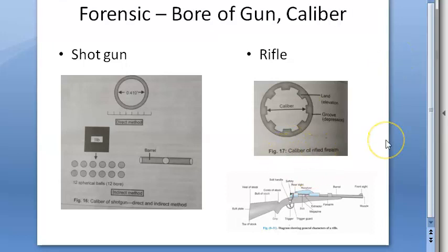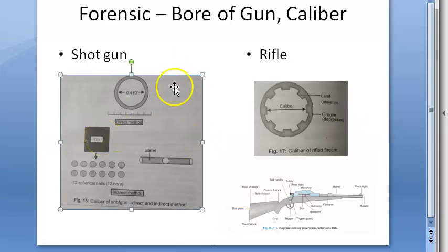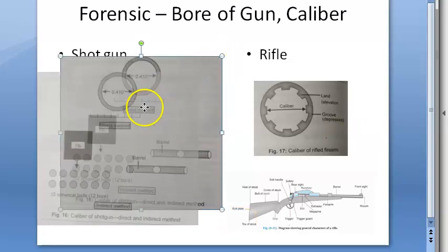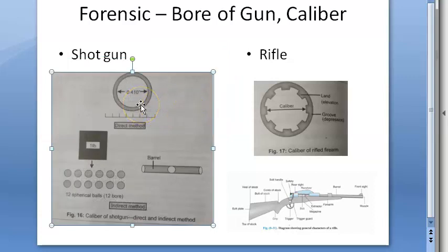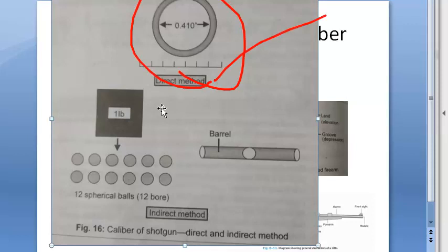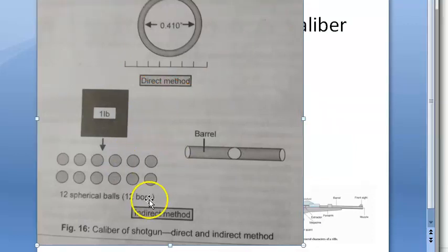So now shotgun, rifle, so many types of guns are there. Let us see shotgun. Basically there are two ways of defining the bore of a shotgun. You can just take the diameter of it, and that is the direct method. Otherwise, there is the indirect method. Coming to indirect method, guys, just take one pound of lead, that would be 454 grams of lead.